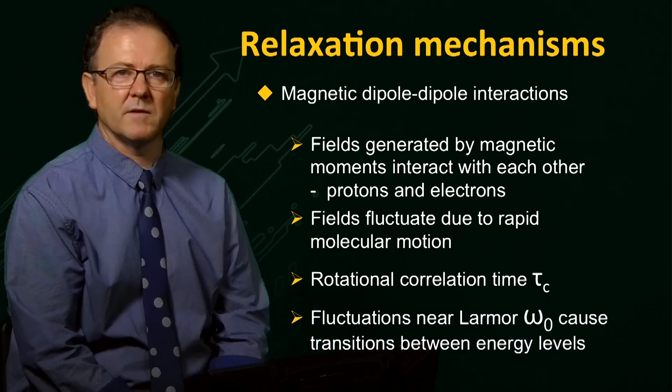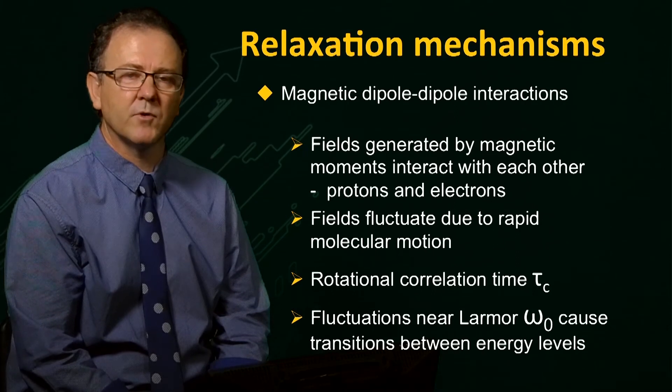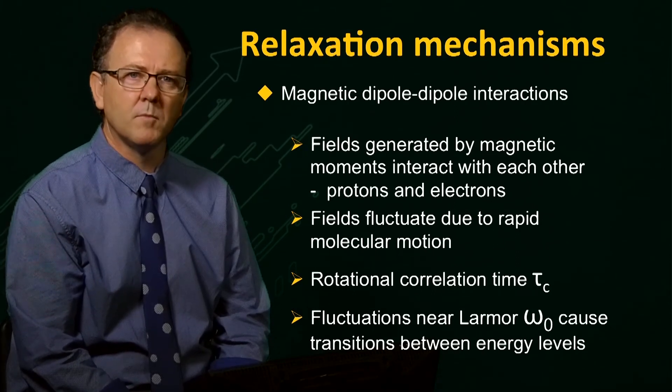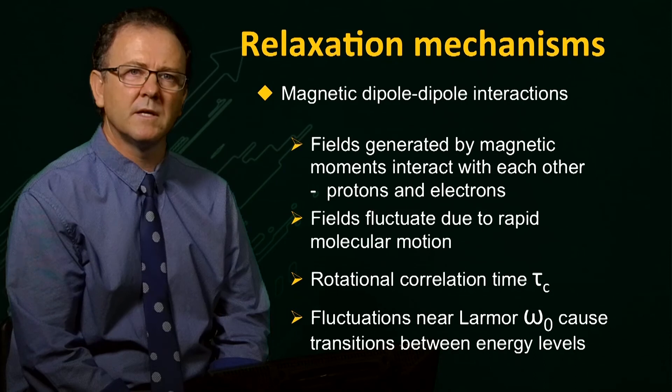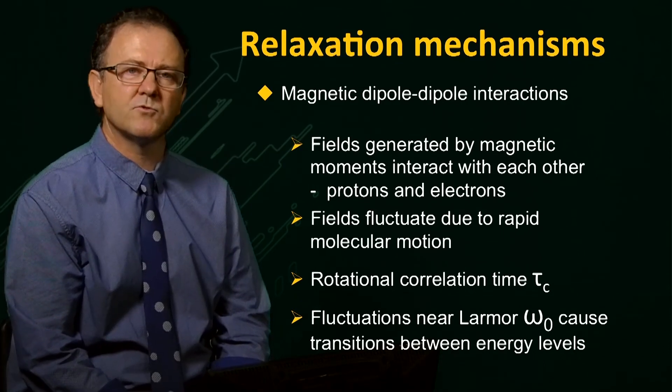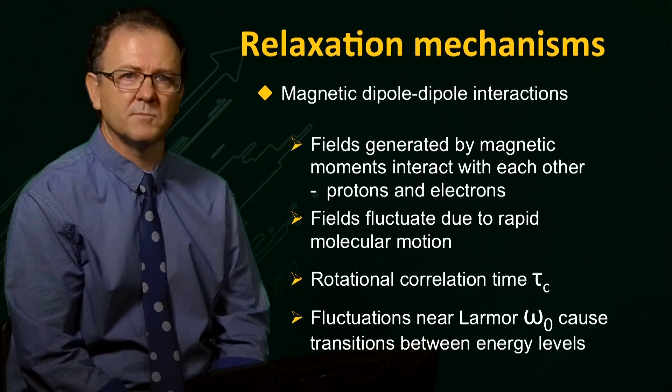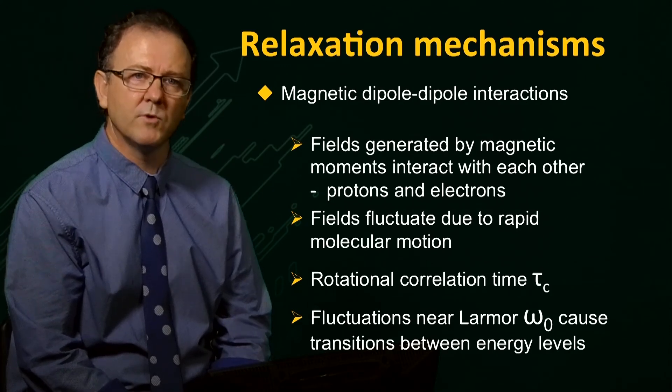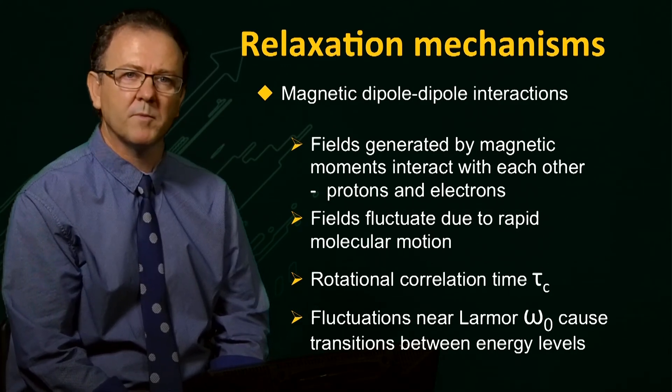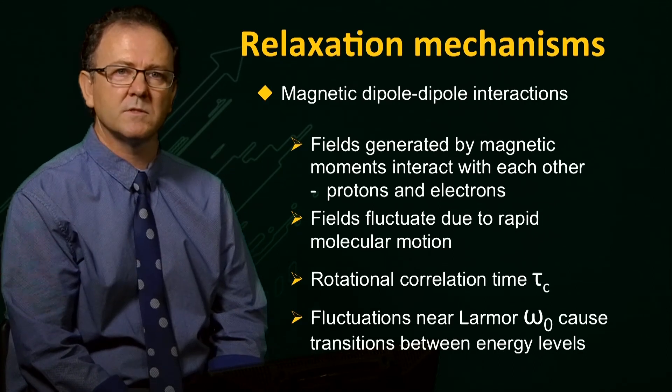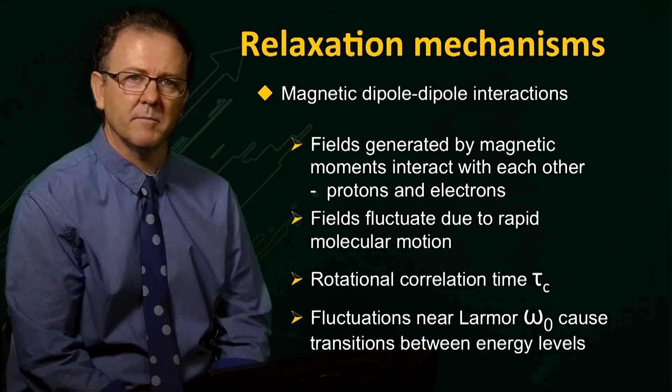If the rate of tumbling, and therefore the field fluctuations, occur at a frequency that is close to the Larmor frequency of the nucleus, then these oscillating fields cause transitions of the spins between the energy levels. This process eventually leads to re-equilibration of the spin populations of the energy levels and recovery of the M0 magnetization.